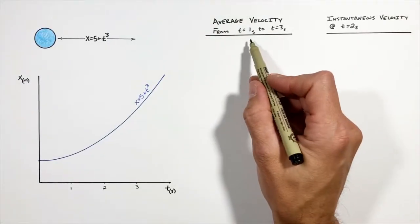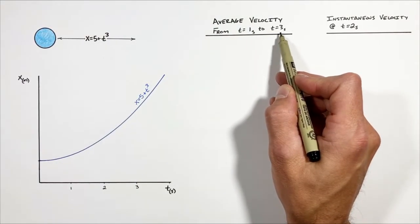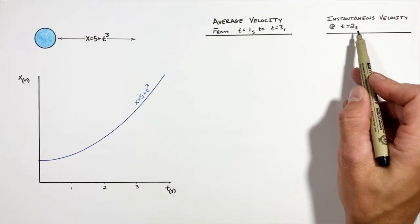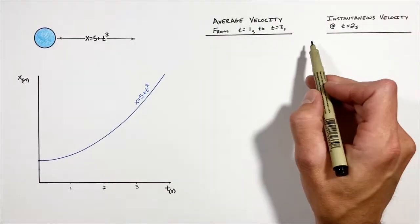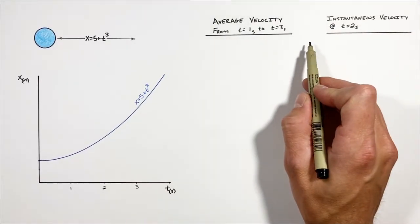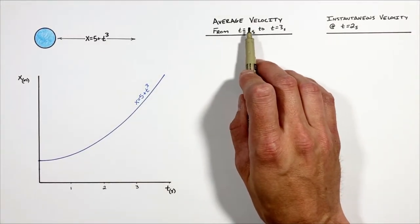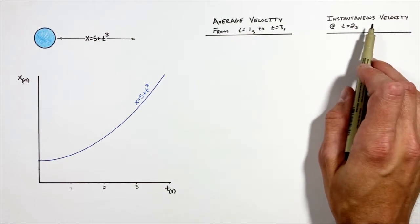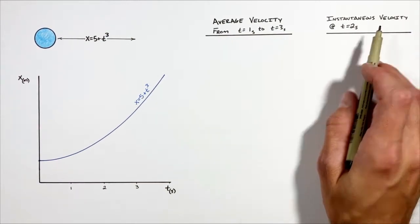We're going to find the average velocity from a time of one second to a time of three seconds, and we're going to find the instantaneous velocity at a time of two seconds. What I want to show in this problem is that average velocity is calculated in a completely different way than instantaneous velocity.